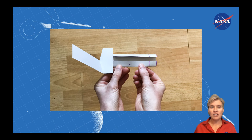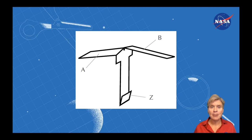Next, fold in X and Y. Those two flaps will fold in to make the body of the helicopter. And then lastly, fold up flap Z so that your finished product looks like this.